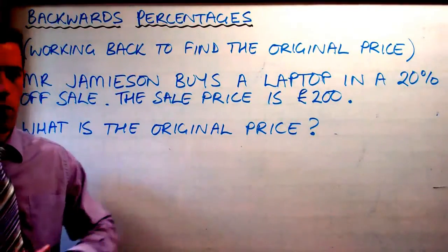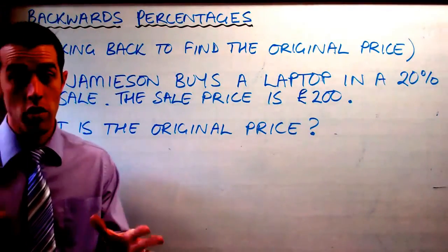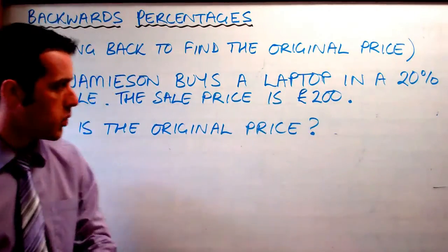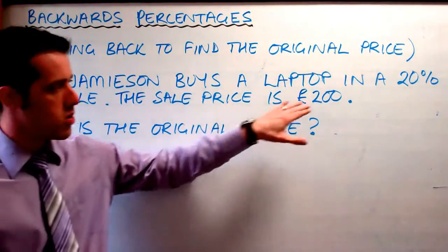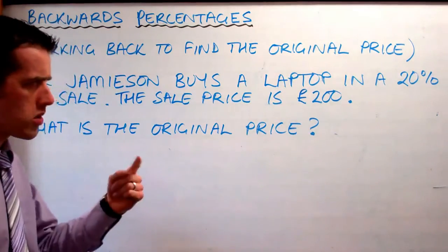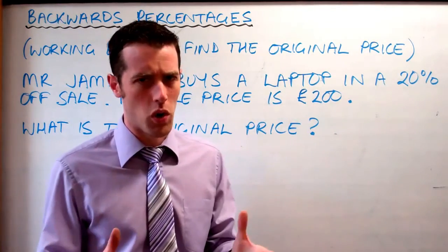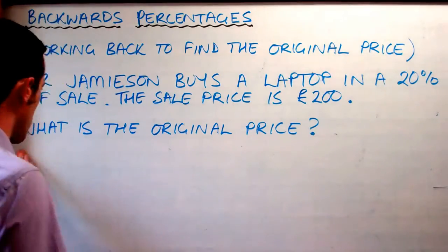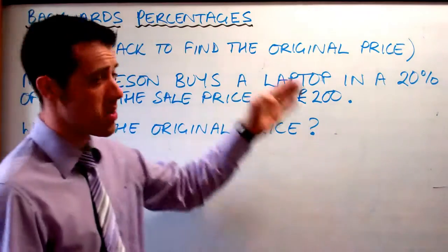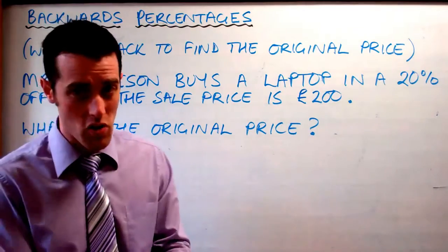Here we are back at the math lab with a problem we encountered when we were out at Laptops R Us — honestly, believe me. Mr Jameson buys a laptop in a 20% off sale, the sale price is £200, and I was trying to work out the original price. I took 20% of £200 and added it back on, but that didn't work. So how do we actually tackle a problem like this? This is generally called backwards percentages — it's also known as inverse percentage and reversing the change.